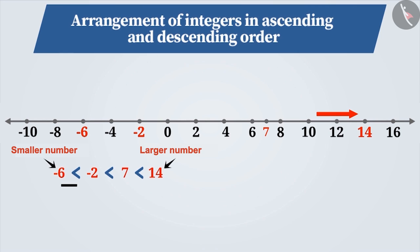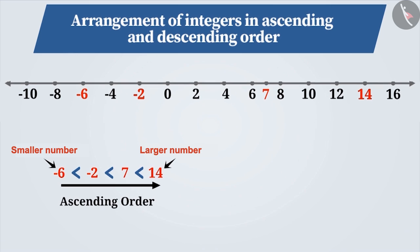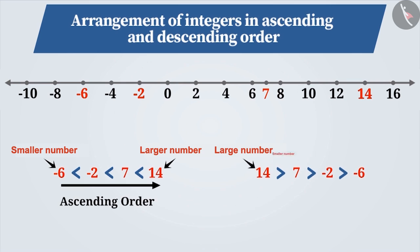The order obtained by arranging the numbers from small to large is called ascending order. If we reverse the order, that is arrange the numbers from larger to smaller, then it is called descending order.